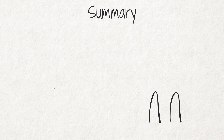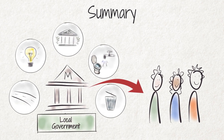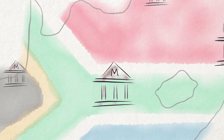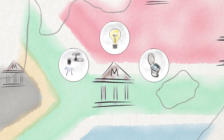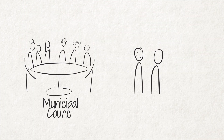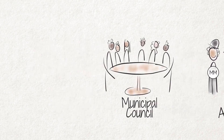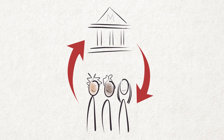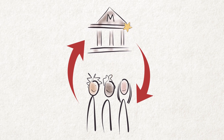Summary. In this video, we explained the role local government plays in providing services to the community. Local government in South Africa consists of municipalities. Municipalities provide basic services such as water, electricity and sanitation that have a direct effect on our daily lives. Each municipality has a council where decisions are made and an administration that implements the work of the municipality. We, the people, should actively participate in municipal processes and hold the members of the municipal council accountable to ensure that our municipalities are run well.